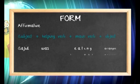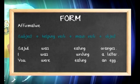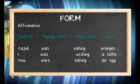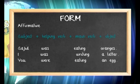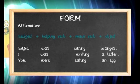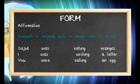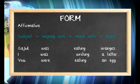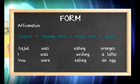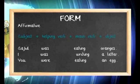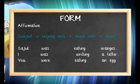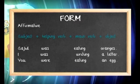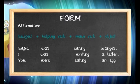We'll discuss form first, and then the function. For the positive sentence formula, we use subject and then a helping verb. Because of the continuity of the action, the helping verb is am, are, or is in the present form, and was or were in the past. Today we are using past continuous tense, so we'll be using was and were. Then the main verb in -ing form, and then the object if required.